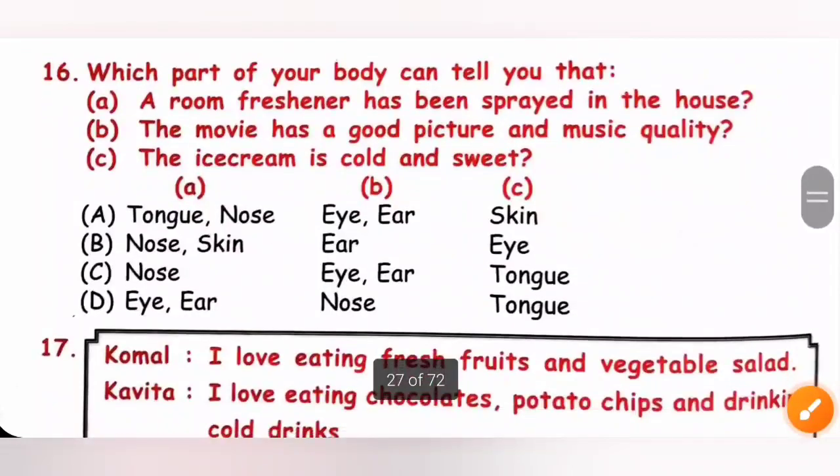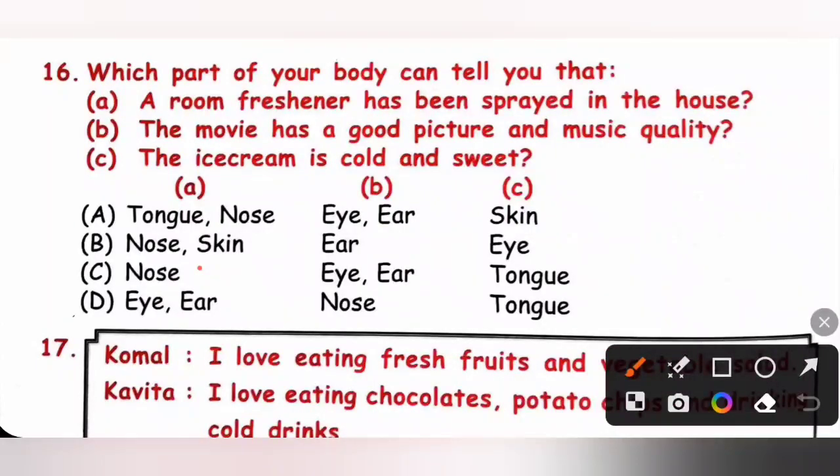Next, achiever section. A room freshener has been sprayed in the house. Which part of your body can tell you that. It is a sense of smell. So, nose. And then, a movie has a good picture and music quality. So, good picture eyes, music quality, ears. So, eyes and ears. The ice cream is cold and sweet. That is sense of taste. So, option C is the correct answer.